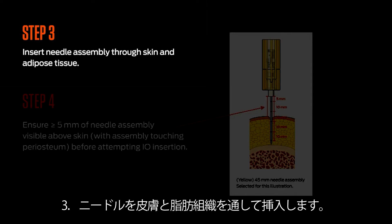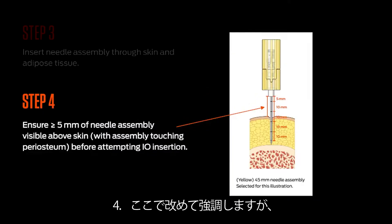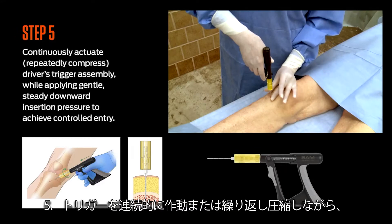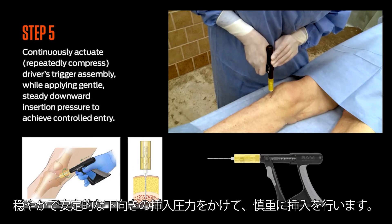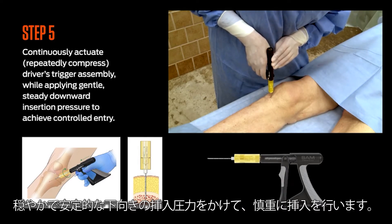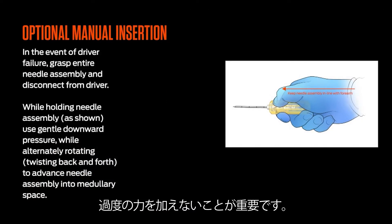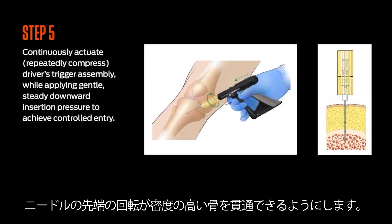Step 3: Insert the needle assembly through the skin and adipose tissue. Needle assembly selection is based upon overlying tissue depth at the insertion site. Step 5: Continuously actuate or repeatedly compress the driver's trigger assembly while applying gentle, steady, downward insertion pressure to achieve controlled entry. Do not use excessive force — use minimal, gentle downward insertion pressure, allowing the needle assembly tip's rotation to penetrate the compact bone.